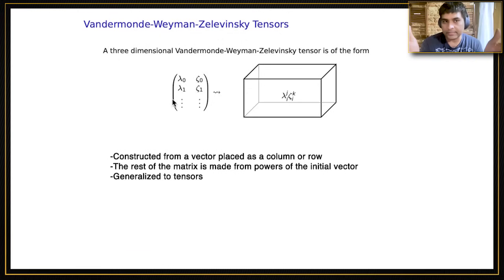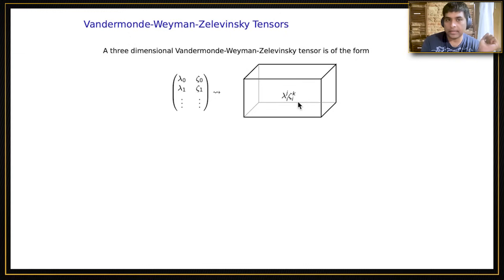A Vandermonde matrix is constructed from a vector, usually placed as a column or row. The other elements of the matrix are derived as powers of elements of the first row or column. Weyman and Zelevinsky generalized this to tensors. To construct a three-dimensional tensor, instead of starting with one vector, we need two vectors: lambda and zeta. The ijkth element of the tensor is lambda_i raised to the jth power times zeta_i raised to the kth power. A priori, there is no reason why this is interesting, but trust me and trust Weyman and Zelevinsky that this is the right generalization of Vandermonde matrices.